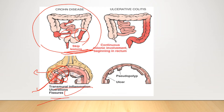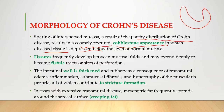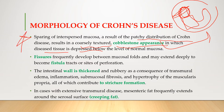Ulcerations and fissures are seen, and due to serpentine ulcers, fistula formation is common in Crohn's disease. Due to the patchy distribution — the skip lesions — it results in a coarsely textured cobblestone appearance, in which diseased tissue is depressed below the level of normal mucosa. This cobblestone appearance will be explained in the next slide with pictures.